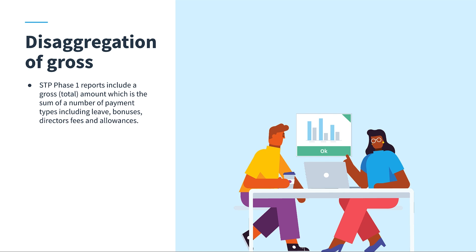Now under STP Phase 2 reporting, each of these items are being disaggregated out from the gross amount and are required to be itemized and reported separately to the ATO.